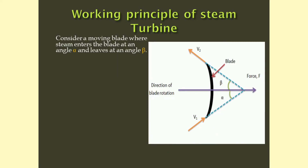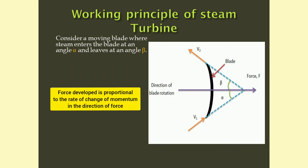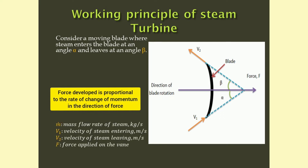Working principle of a steam turbine. Consider a moving blade where steam enters the blade at an angle alpha and leaves at an angle beta. When the steam jet glides tangentially on the curved surface of the blade, the direction of steam flow changes, which changes the momentum of the steam jet, and so a force develops and the blade moves with a linear velocity. According to Newton's second law, the force developed is directly proportional to the rate of change of momentum acting on the blade. Let m-dot be the mass flow rate of steam in kilogram per second, v1 and v2 be the inlet and exit velocity of steam in meter per second, and f be the force developed.